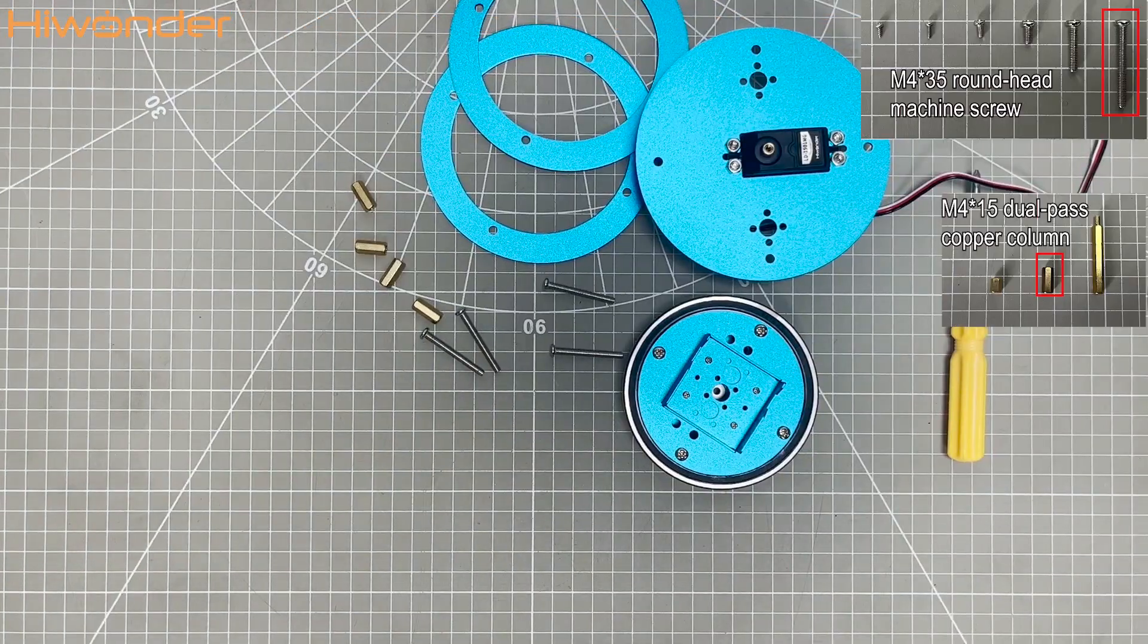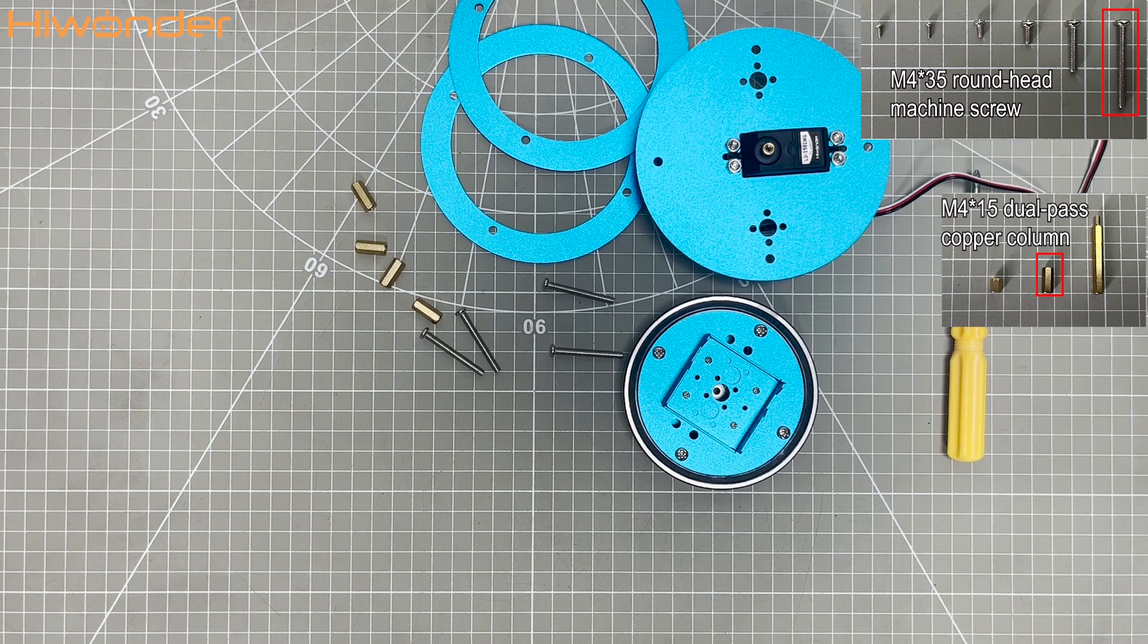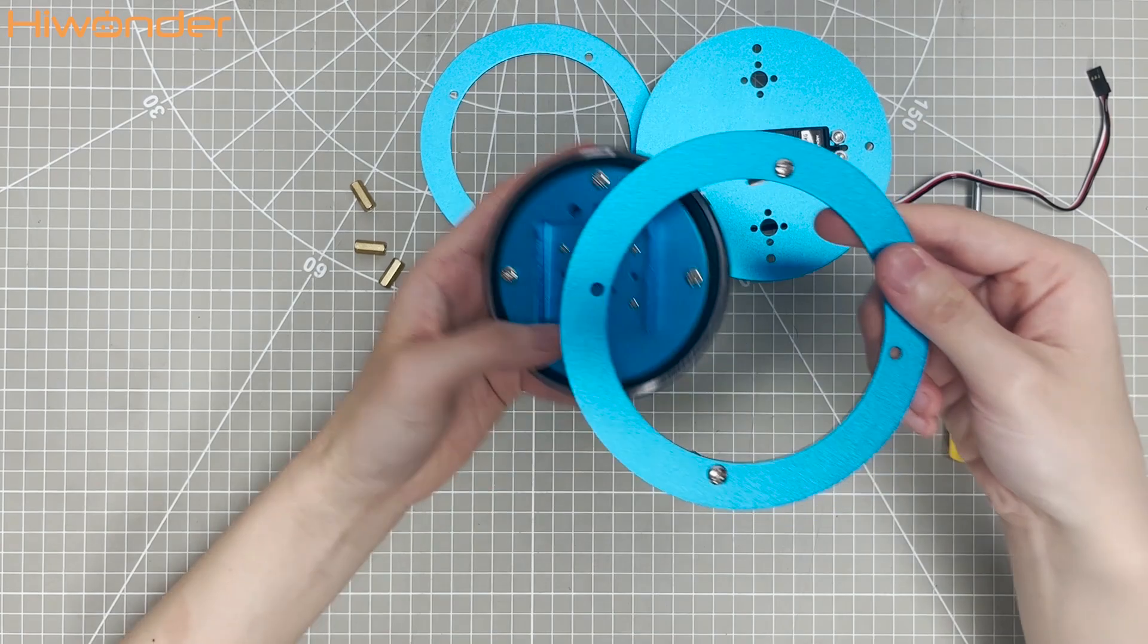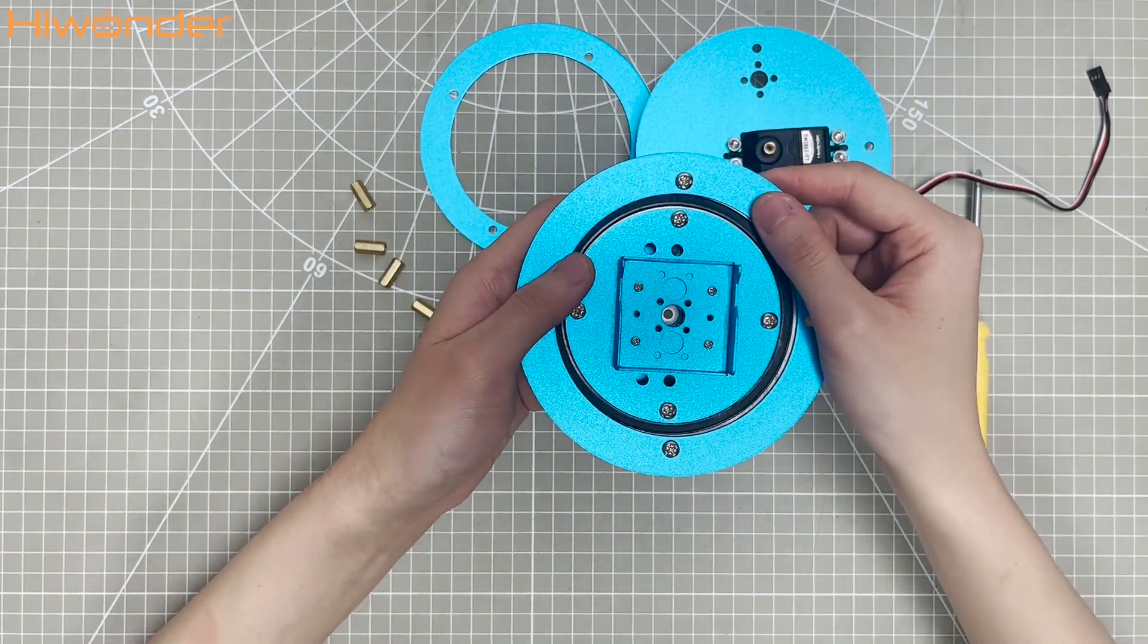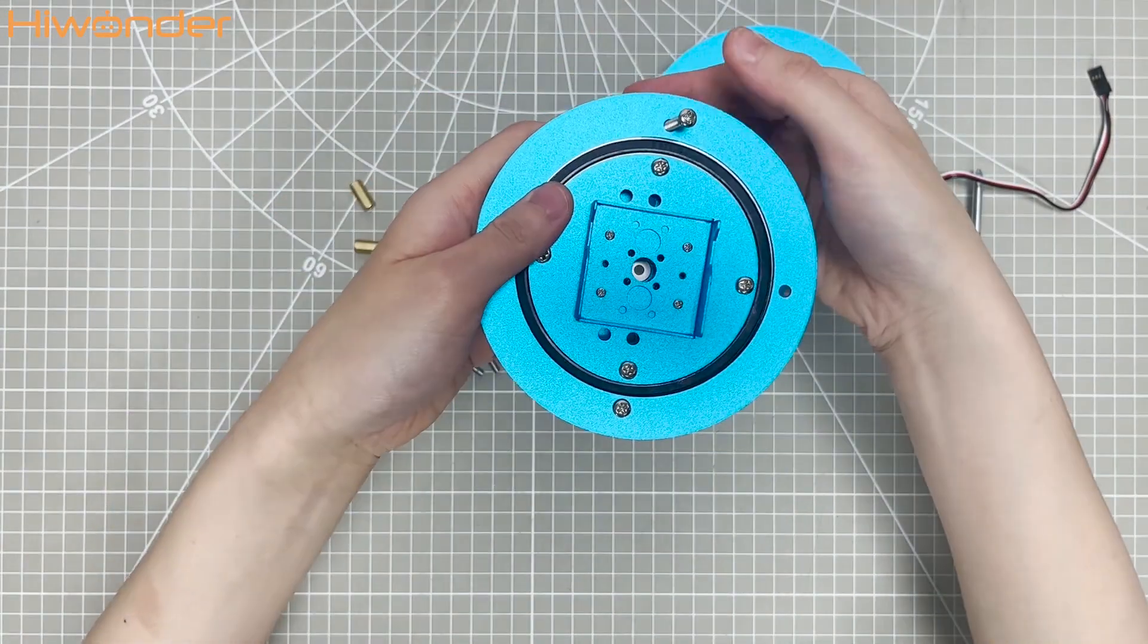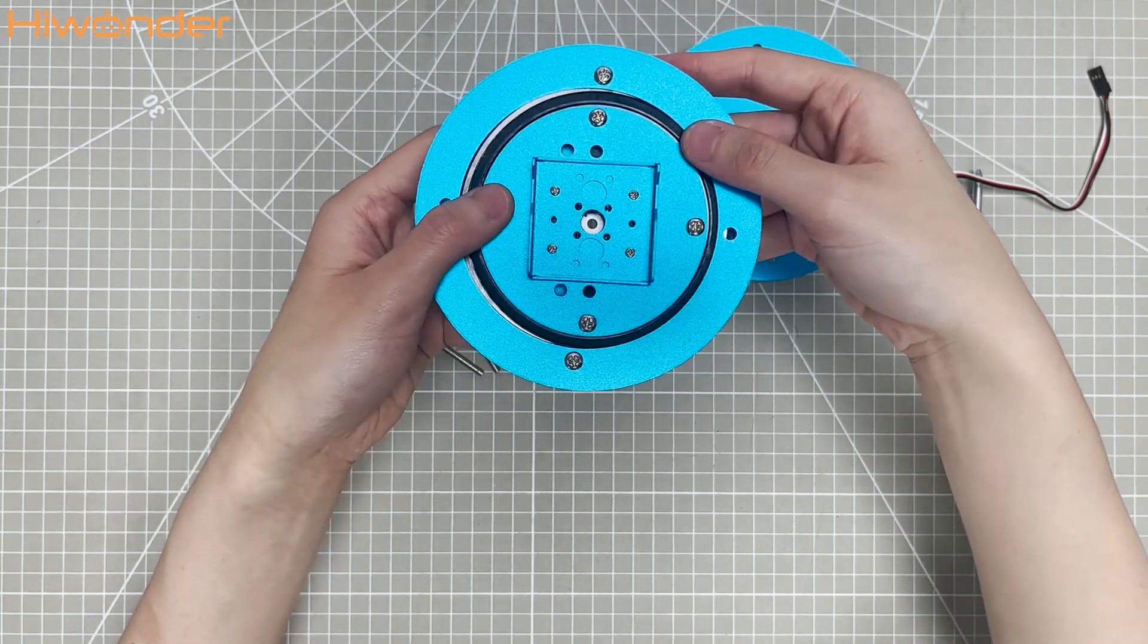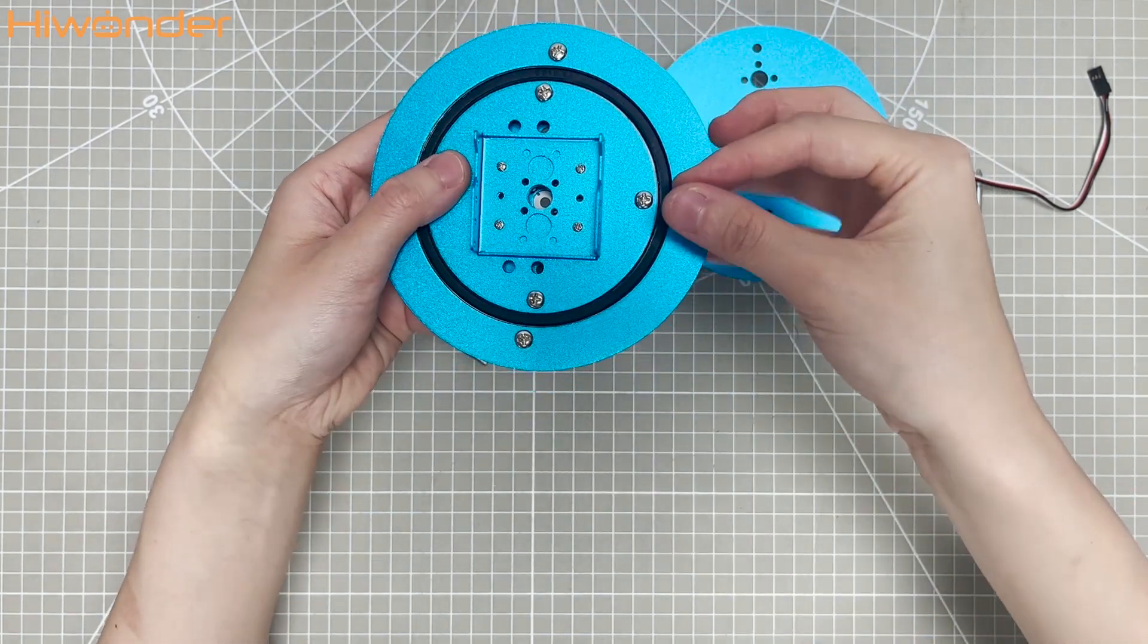Moving on, let's assemble these four components together. Pass two screws diagonally through the holes and put the hollow circle bracket on this component, then pass the screws through the other hollow circle bracket. Next, pass the remaining two screws through the holes.